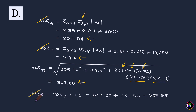The liquidity-adjusted VAR equals the VAR plus the cost of liquidation. The VAR is calculated assuming mid prices, so it must be adjusted upwards to account for liquidation cost. Liquidity-adjusted VAR = $307 + $221.55 = $528.55.